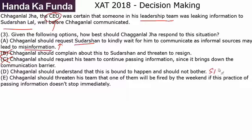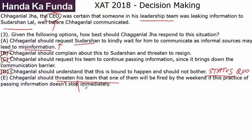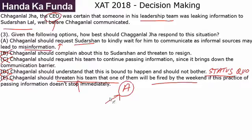Option D: Chagan Lal should understand that this is bound to happen and should not bother — maintaining the status quo. As I've said in concept videos, not doing anything is also a decision, and 90% of the time maintaining the status quo is a bad decision. Option E: Chagan Lal should threaten his team that one of them will be fired by the weekend if the practice doesn't stop immediately — very drastic, very rude, definitely not the answer. Among the options, A is the best and most reasonable choice.